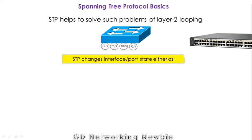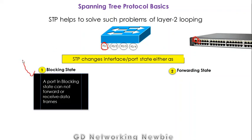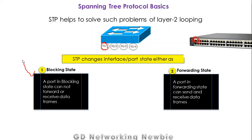Spanning Tree Protocol changes the port state to either a blocking state or a forwarding state. It makes the switch ports operate in one of these two states. A port in blocking state cannot forward or receive data frames, while a port in forwarding state can send and receive data frames.